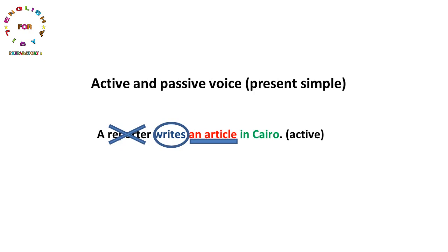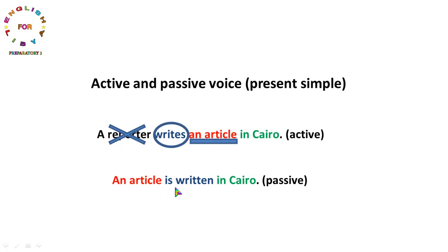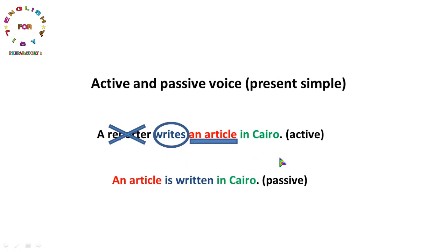يعني writes - التصريف الثالث بتاع الفعل write هو written. الجملة تصبح: an article is written in Cairo. أخذنا المفعول به an article حطيناه في بداية الجملة، ثم وضعنا verb to be اللي هي is لأن article تعود إلى ضمير it، ثم وضعنا التصريف الثالث written. وأحياناً يذكر الفاعل في نهاية الجملة مسبوقاً بـ by.